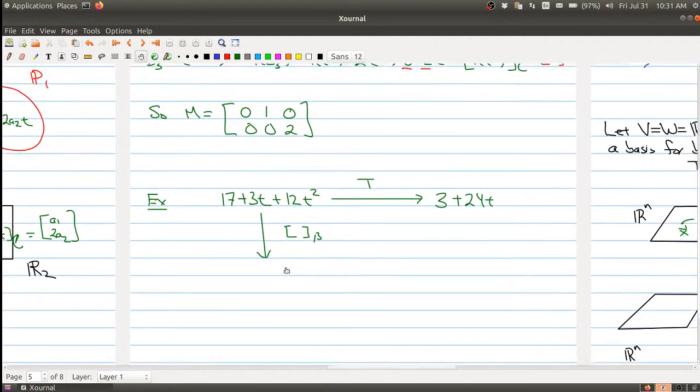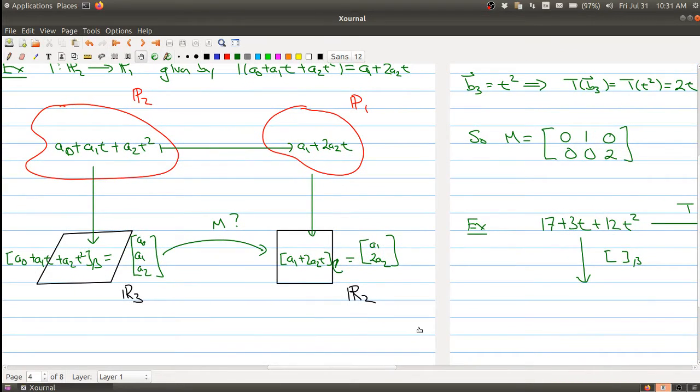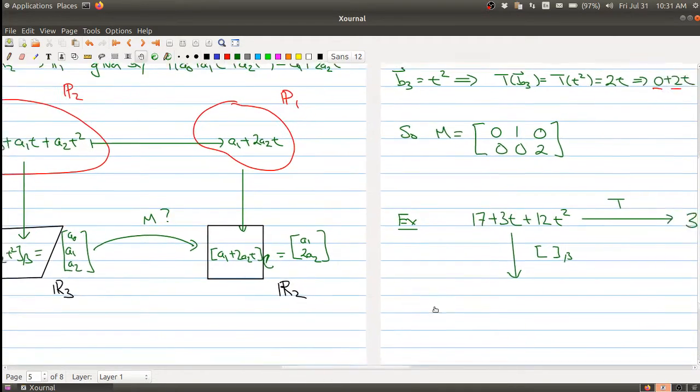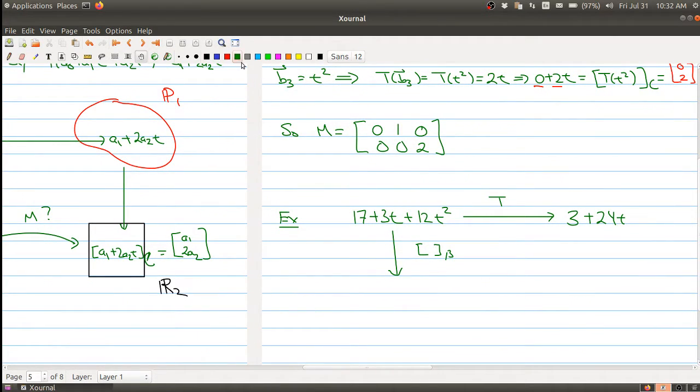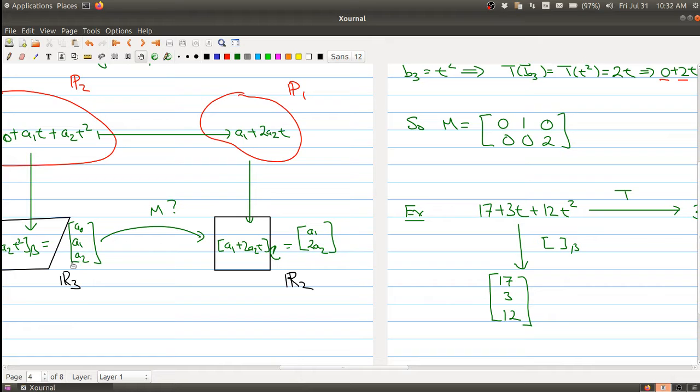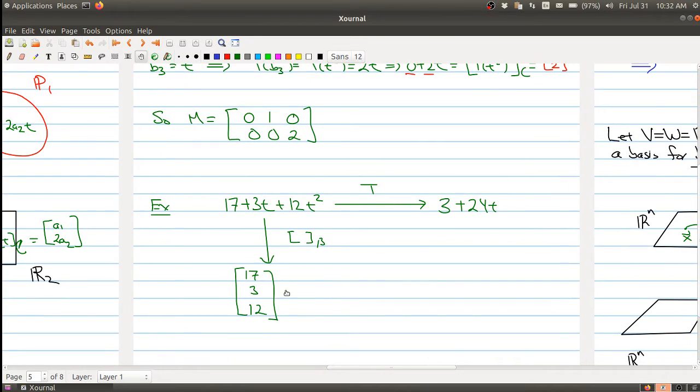Now what we're going to do is take this polynomial and map it to R³ with respect to its basis. So this polynomial would get mapped to (17, 3, 12). That's the vector here.